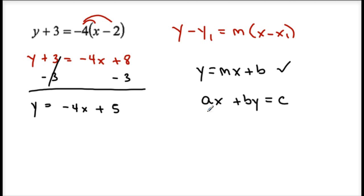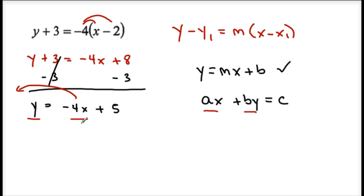Now from this form, I want to convert it into standard form. I want both my terms with x and y on the same side. This negative 4x needs to be on the same side as the y. So I'm going to add 4x to both sides — plus 4x, plus 4x.